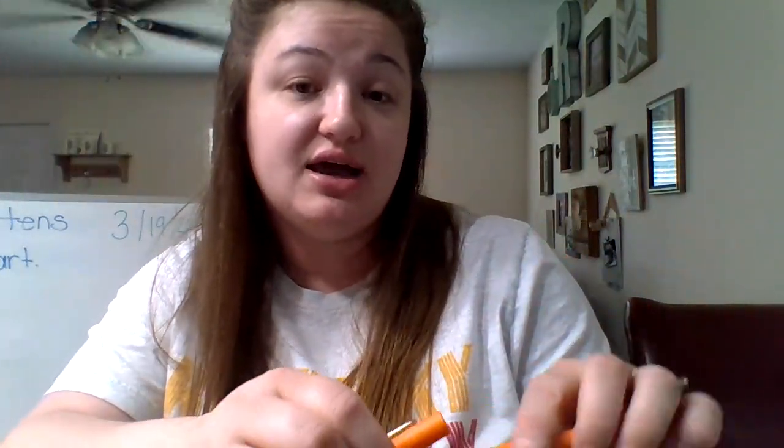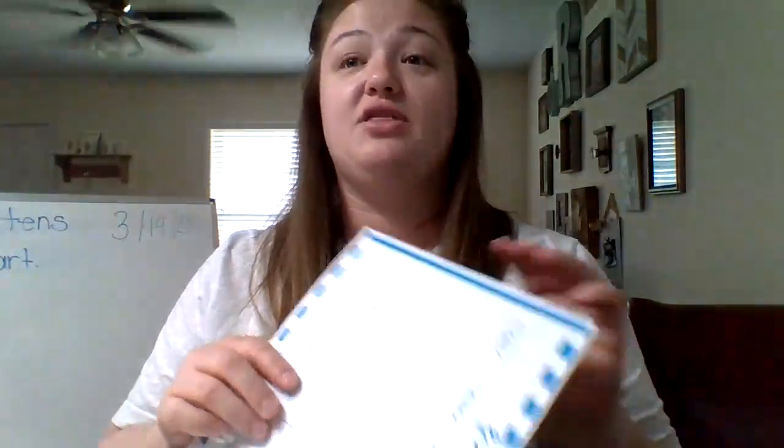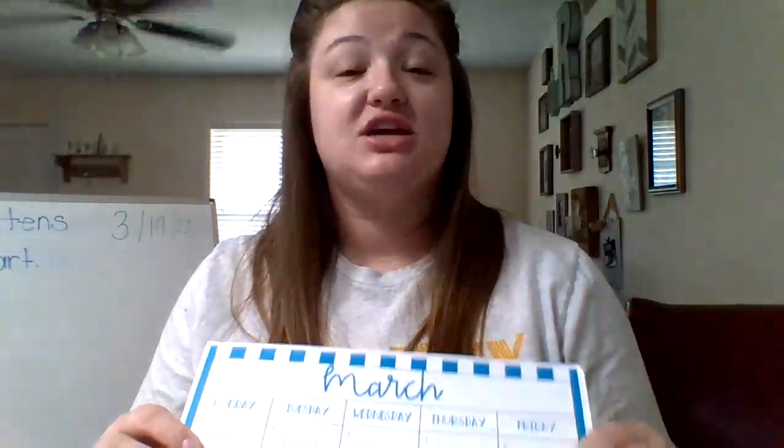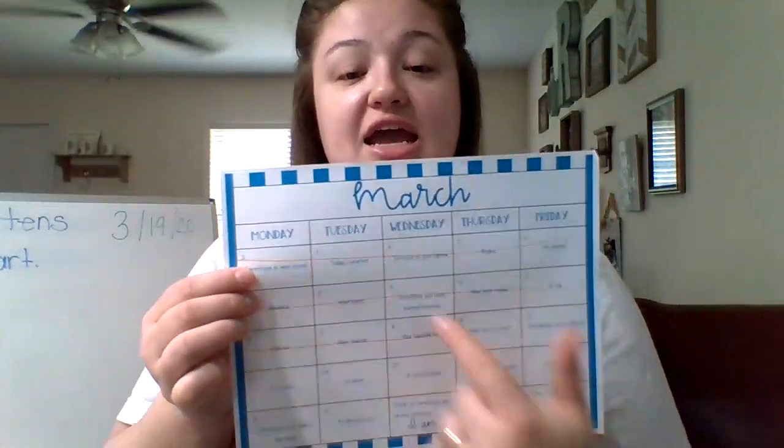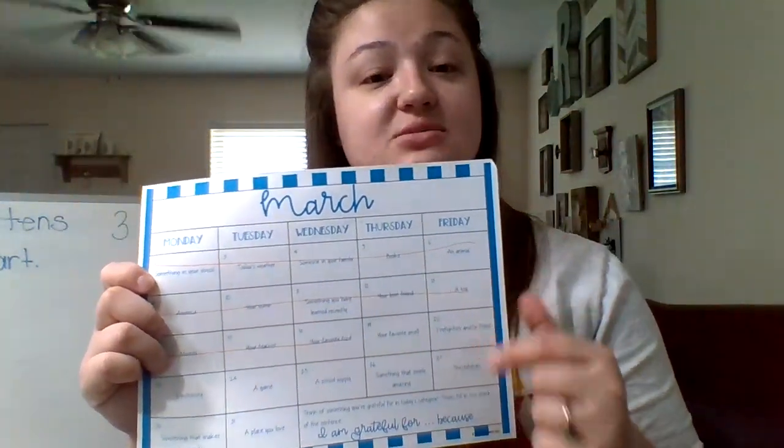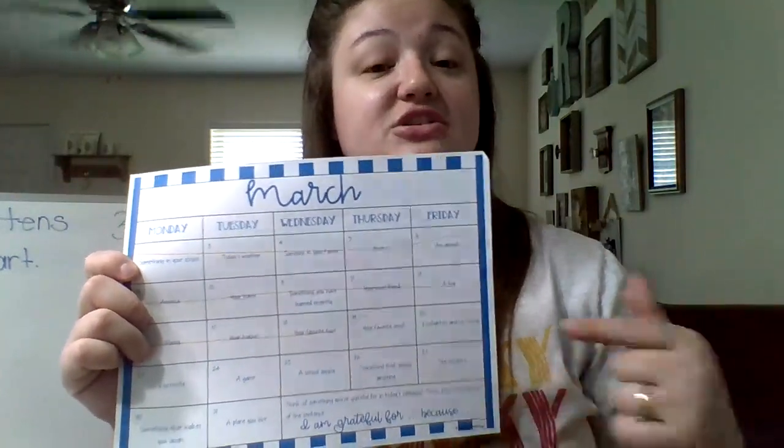Once you've completed all of those, make sure you do the quick check online and have your parents send me a copy of your work. Before I go, I want to show you something I found online that I thought was really great with everything going on right now. It's a calendar — it says March and it's a grateful calendar. In each box it's got a different reason to be grateful, and you're supposed to write a little sentence to go with it. Today is the 19th, so today you're grateful for your favorite smell.